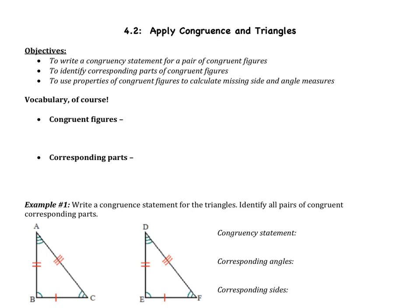Welcome to our second video of chapter 4, which is section 2, Apply Congruence and Triangles. We have three objectives for today: we are going to write a congruency statement, identify corresponding parts, and use properties of congruent figures to calculate missing side and angle measures.